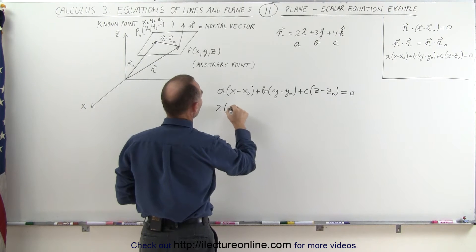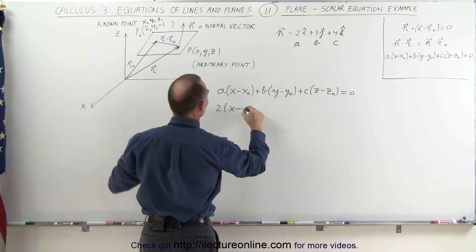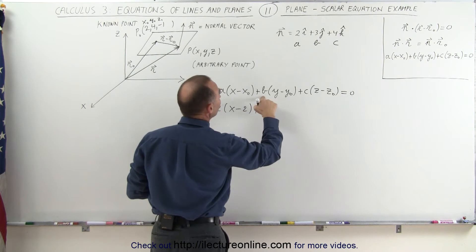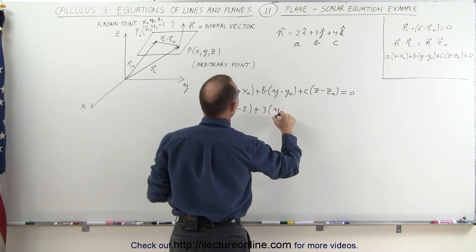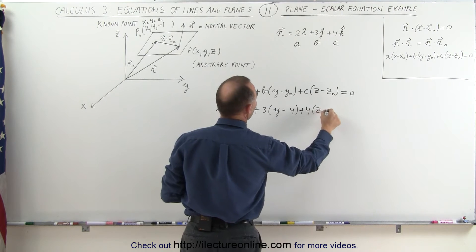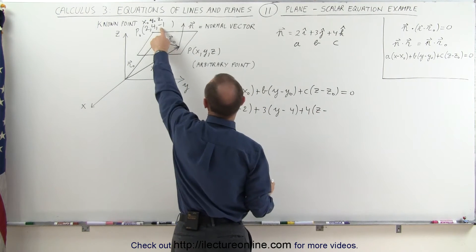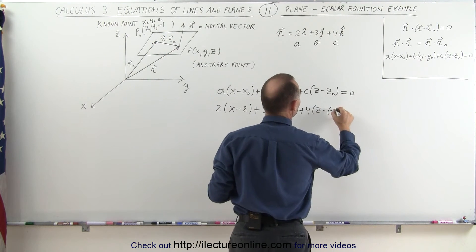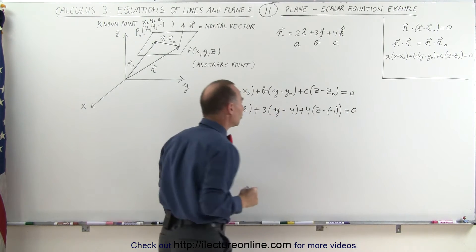We get 2 times X minus X sub-naught, which is 2, plus B, which is 3, times Y minus Y sub-naught, which is 4, plus 4 times Z minus Z sub-naught. We subtract the negative 1, and that adds up to 0.